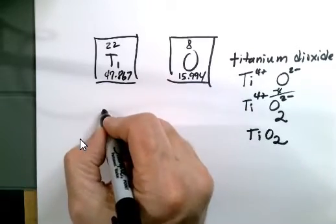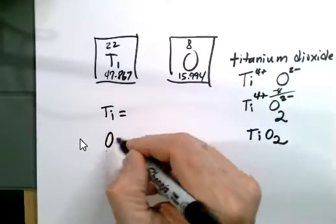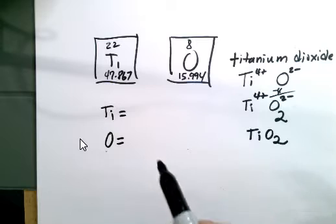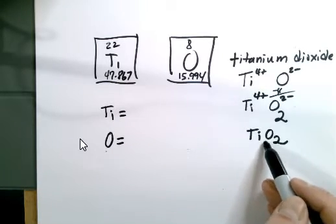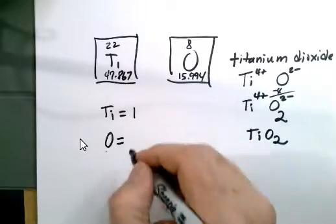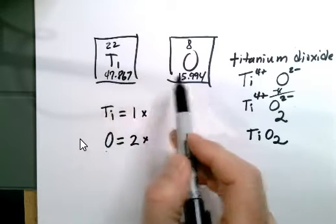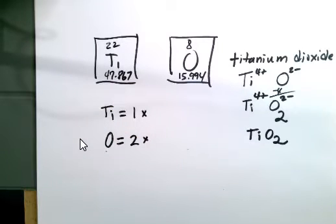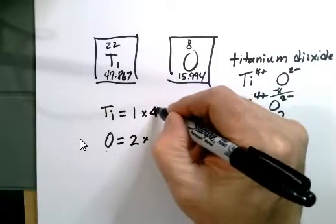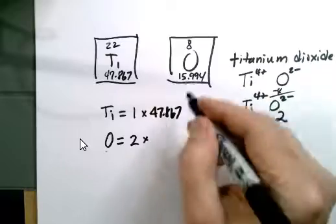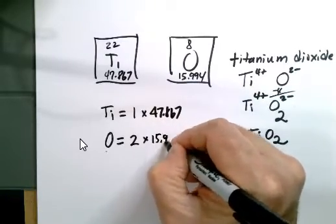The way I do this is I list the elements: titanium and oxygen. Looking at the formula, there's one titanium and two oxygens. I then look on the periodic chart and find the mass of one mole of each. For titanium, 47.867, and for oxygen, 15.994.